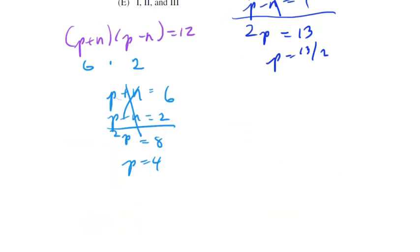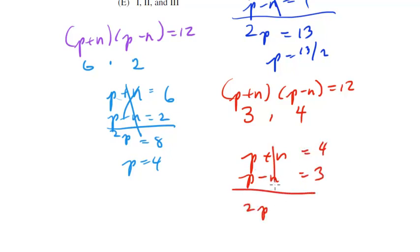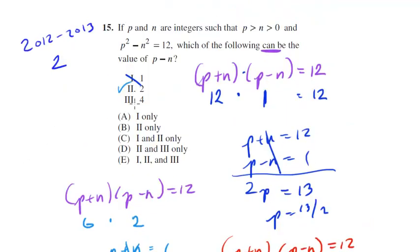And finally, let's try 4. So we would get (p+n)(p-n) is 12. If p minus n is 4, that means this is 3. So now we'll solve the system of equations here. We're going to get 2p equals 7, and again, we're going to get p is 7 halves, another non-integer solution, so we can get rid of 3.